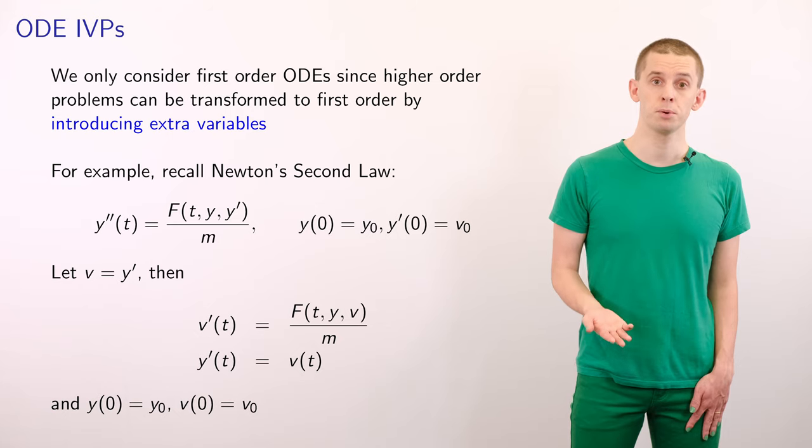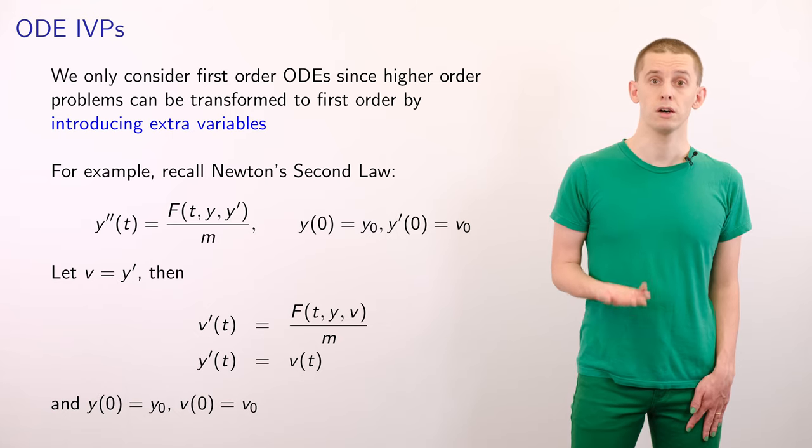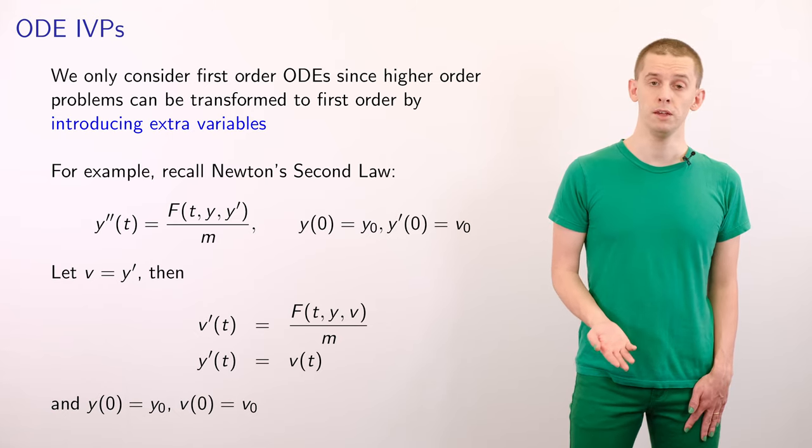And then we can write down a first order system for v and y. We have that v prime is equal to f of t and y and v.